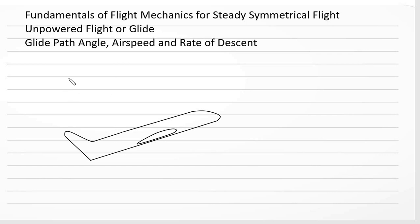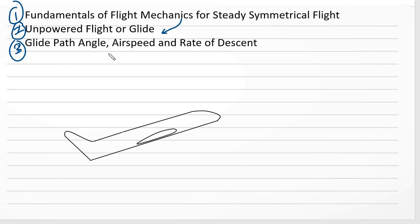Hello, so in this video we are going to talk about flight mechanics. This is part one of three videos which will be about fundamentals of flight mechanics. We will then apply that to unpowered flight or glide, and in the third video we will discuss glide path angle, airspeed and rate of descent for unpowered glide. So let's start this video.